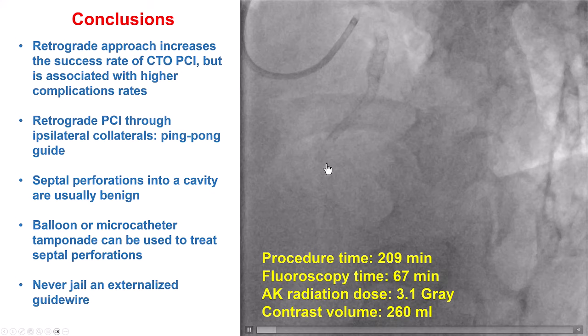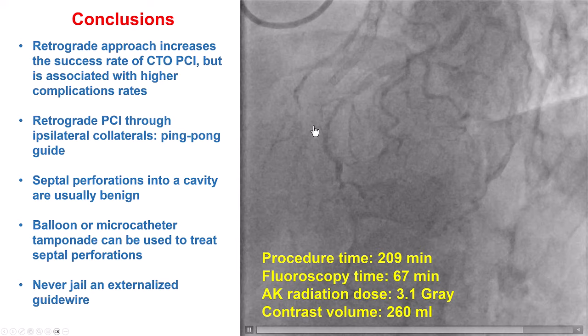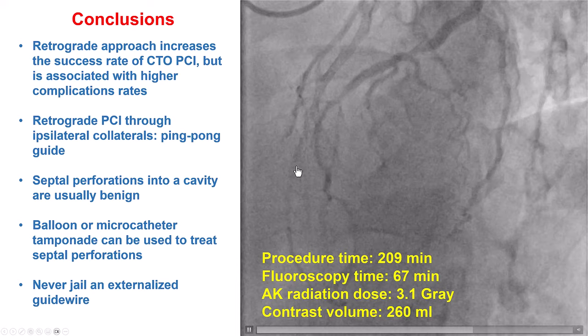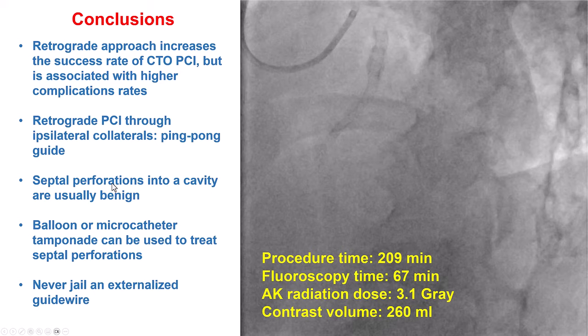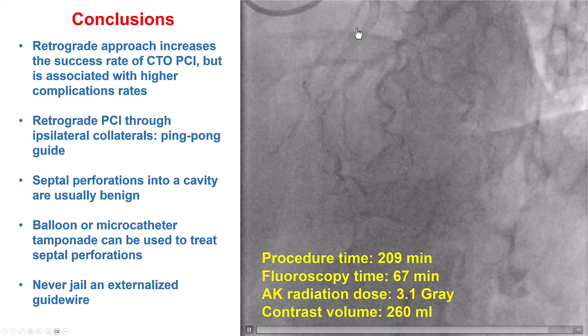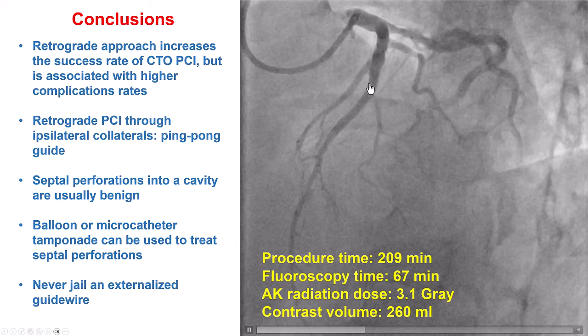In terms of the retrograde approach, this can happen through septals from left to right — the most common — or right to left, which is less common. Even less common is left to left, which is what we did here: a proximal septal to a distal septal, going septal to septal. We then performed a reverse CART, externalized the guidewire, and used a dual-lumen microcatheter to advance an antegrade wire. Before placing stents, we removed the retrograde wire — we never want to jail a retrograde wire or microcatheter. They must be removed prior to stent placement. Thank you.